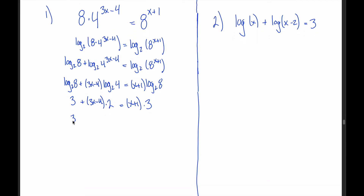Get rid of the parentheses by distributing: 2 times (3x minus 4) gives 6x minus 8, and 3 times (x plus 1) gives 3x plus 3. Collect x terms on one side: subtract 3x from both sides to get 3x, then add 8 and subtract 3 to get 11 on the right. Divide both sides by 3 and you get x equals 8 thirds.